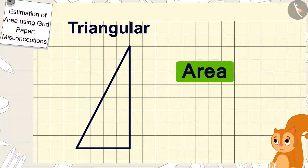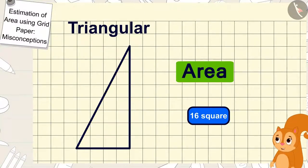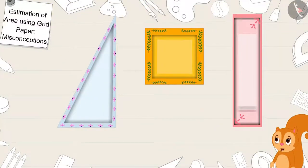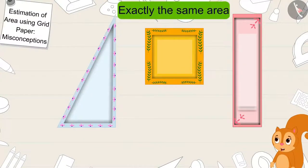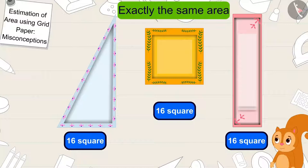Chanda too found the area of the triangle shaped plate just like you. Hey Gaggoo, there are sixteen squares in the area of this triangle shaped plate too. You are right. The shapes of these plates may be different, but their areas are exactly the same. Chanda said to Gaggoo.